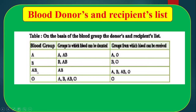Blood group AB can receive blood from every blood group. That is why AB is called the universal receiver. On the other hand, blood group O can donate to all blood groups — A, B, AB, and O. That is why O is called the universal donor.